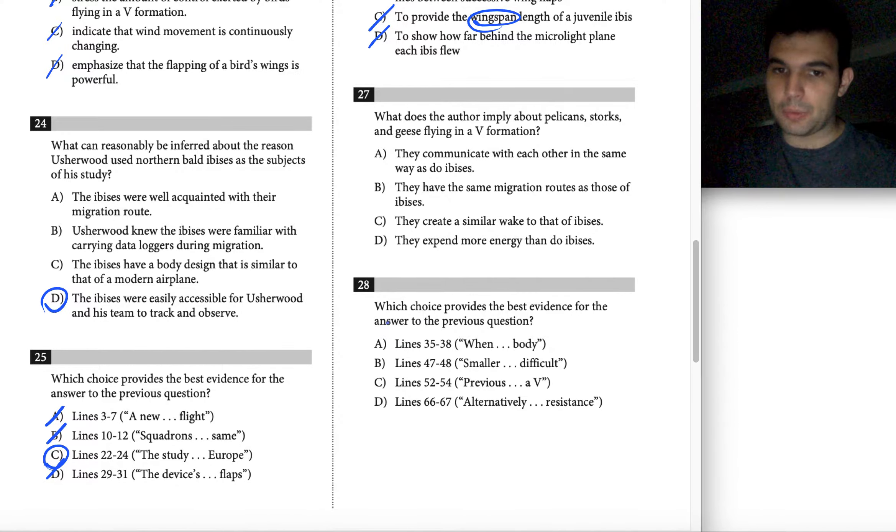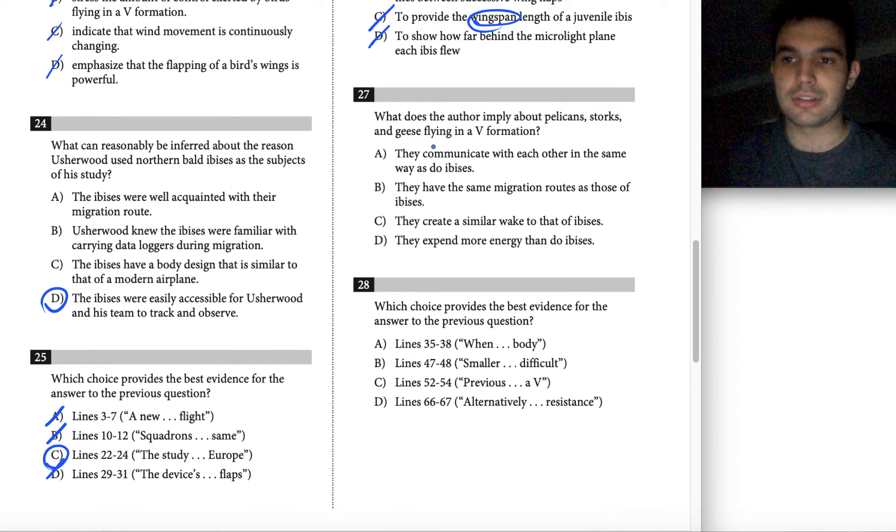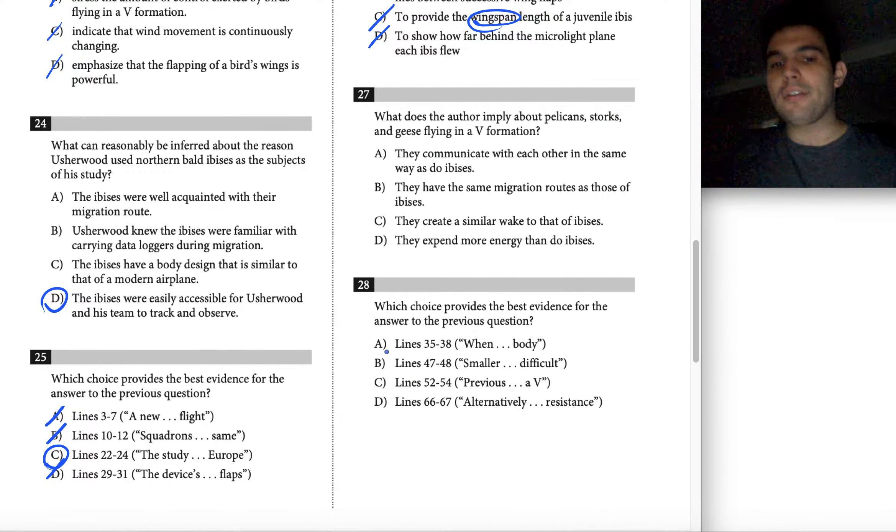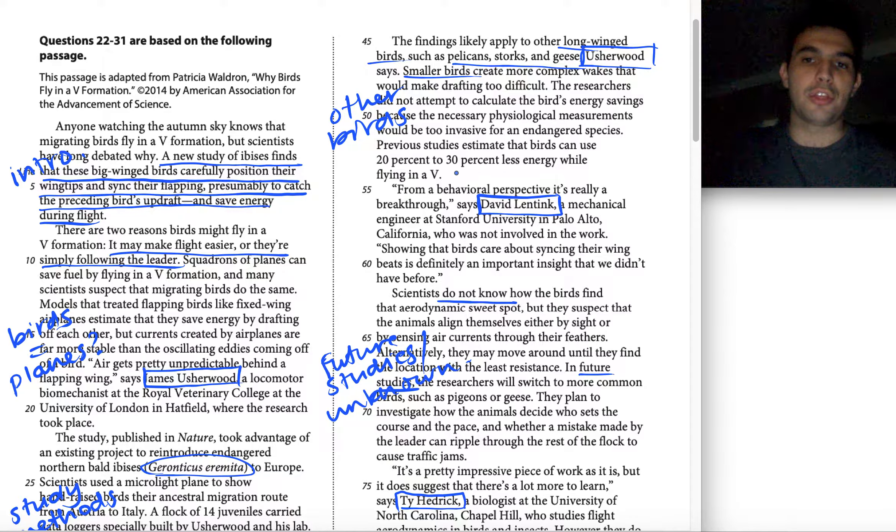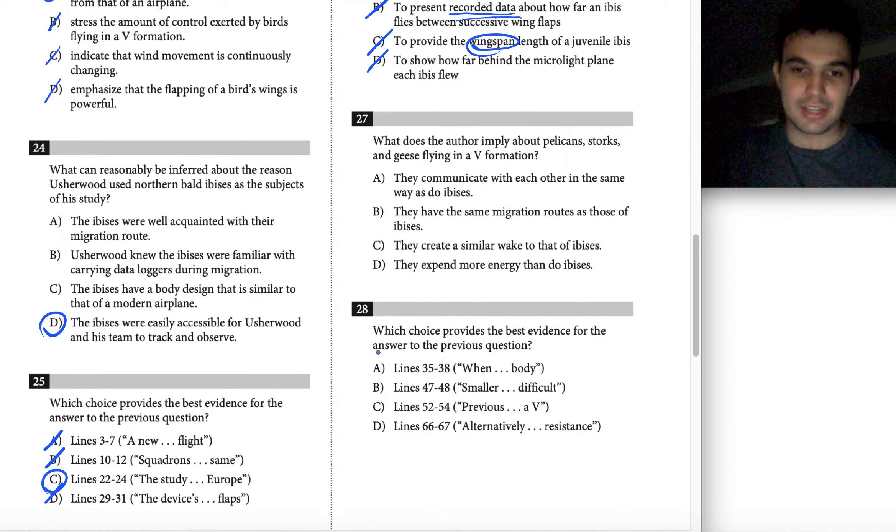So let's start with 28 and look at our lines of evidence and see if they answer this question about what the author implies about pelicans, storks, and geese as it mentions in 27. Right off the bat, I can eliminate choice A because of the main idea that we wrote. I know that other birds like pelicans, storks, and geese don't appear until line 45, which means that a choice that precedes that in line number, there's no way that it talks about pelicans, storks, or geese. So for that reason, A is already off the table.